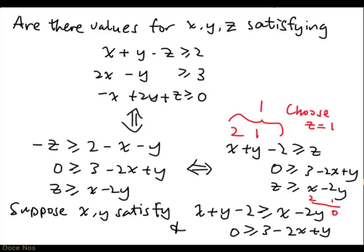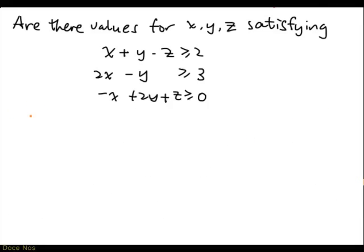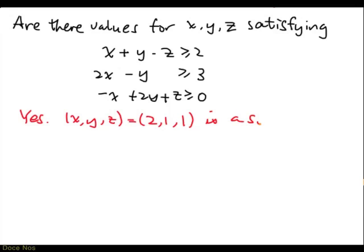In summary, the answer is yes, because we have found a solution: x, y, z equal to 2, 1, 1. You can check: 2 plus 1 minus 1 equals 2; 2 times 2 minus 1 equals 3; and minus 2 plus 2 times 1 plus 1 equals 1, which is greater than or equal to 0. So all three inequalities are satisfied.